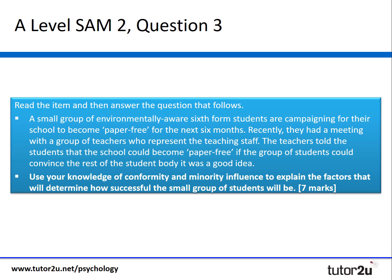It says: a small group of environmentally aware sixth form students are campaigning for their school to become paper free for the next six months. Recently they had a meeting with a group of teachers who represent the teaching staff. The teachers told the students that the school could become paper free if the group of students could convince the rest of the student body that it was a good idea. Using your knowledge of conformity and minority influence, explain the factors that will determine how successful the small group of students will be — for seven marks.